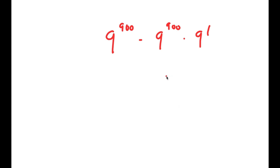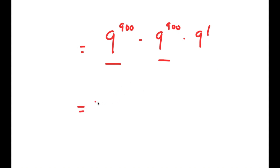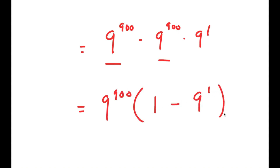Now these two terms both have 9^900 in them, so I'm going to factor out 9^900 — which is what I said I was going to do at the beginning of the video. I get 9^900 times (1 minus 9^1).